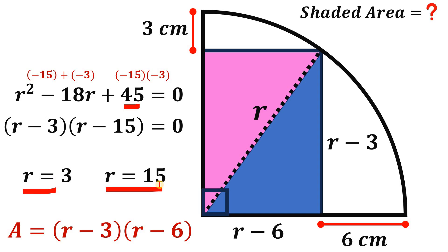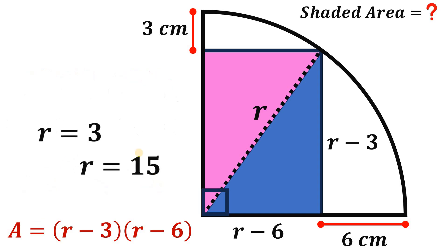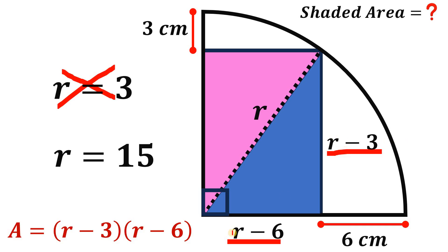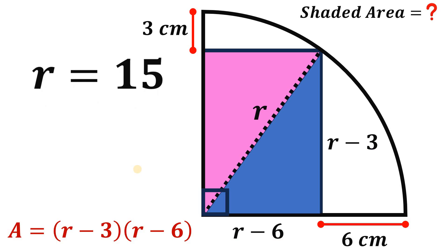Now, the question is which one is the correct value for R? So let's analyze the figure. Now, we know the legs of this right triangle or the base and the height of this rectangle cannot be equal to 0 or cannot be a negative number. So R cannot be equal to 3 because 3 minus 3 is 0, 3 minus 6 is negative 3. So R equals 3 is not part of our solution. R equals 3 cannot be the length of the radius of our quarter circle.